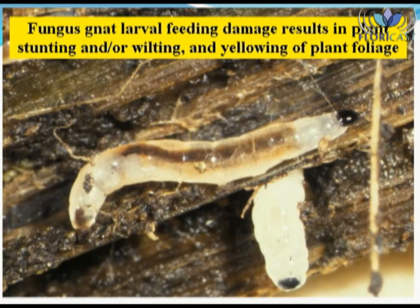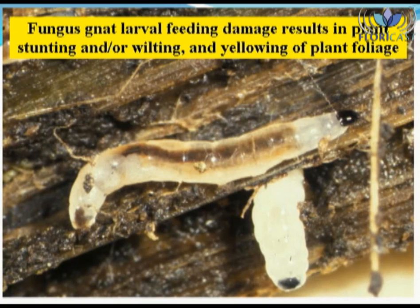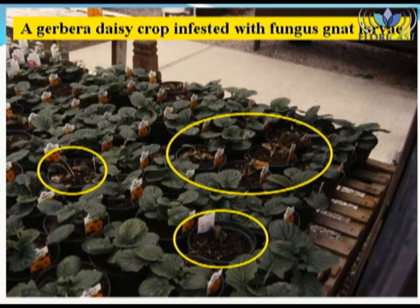Fungus gnat larvae, which reside in the growing medium, have chewing mouth parts. As such, fungus gnat larvae feed on plant roots, thus preventing plants from uptaking water and nutrients. This results in plants exhibiting typical above-ground symptoms such as stunting, wilting, and or yellowing of plant leaves, especially the older leaves. If a plant is suspected of being fed upon by fungus gnat larvae, the plant should be removed from the container, and the root system and surrounding growing medium should be thoroughly inspected for fungus gnat larvae, which have black head capsules. This image shows a Gerbera daisy crop infested with fungus gnat larvae — note the random or clumped distribution of the plants exhibiting symptoms, in this case dieback, from fungus gnat larvae feeding injury or damage.